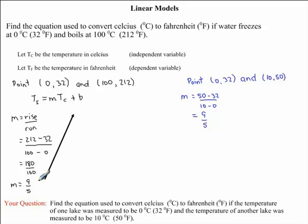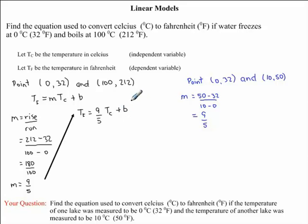Now that we know our slope is 9 over 5, we can substitute this value into our equation: T subscript F is equal to 9 over 5 times the temperature in Celsius plus B. The last thing we need to do is find the T subscript F intercept. In order to do this, we need to substitute one of our points into this equation. I'm going to choose the first point since it will be easier because there's a 0 there, but you can use the other point as well.